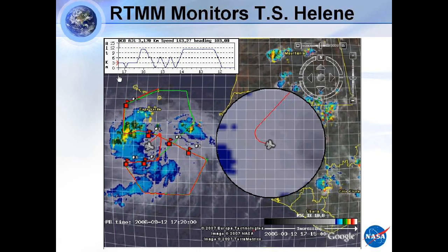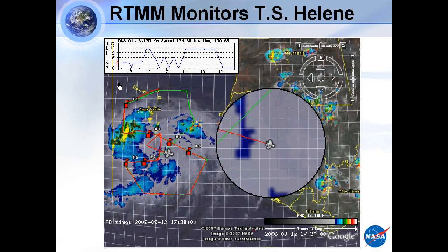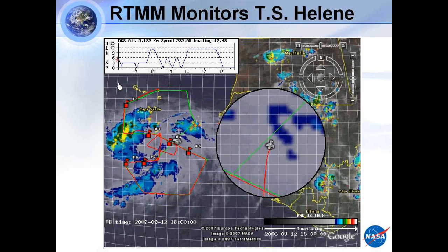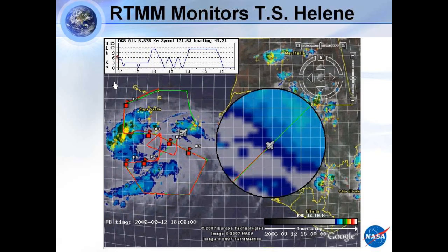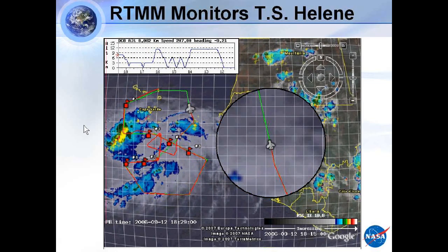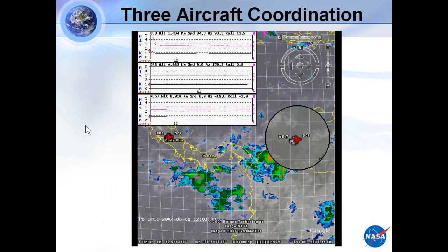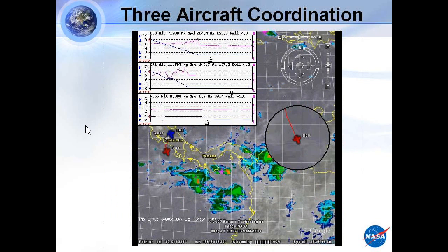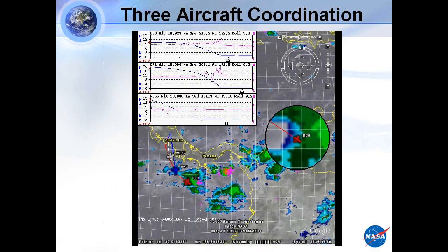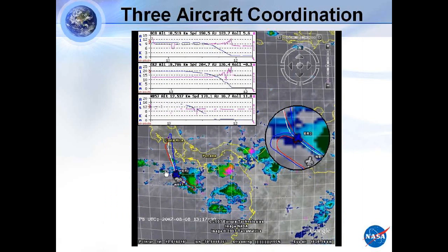This is TC4 — we're in Costa Rica, 2007. Now we've got three airplanes flying. Along the track you also see pitch and roll displayed in magenta. Now you see three airplanes. What makes this really powerful is we're trying to stack all three aircraft simultaneously: the ER-2 flying about 65,000 feet, the WB-57 flying around 52,000 feet, and the DC-8 around 40,000 feet. On the fly, David Starr is making decisions — we've got to get all three planes into stacked formation.